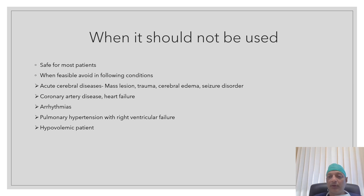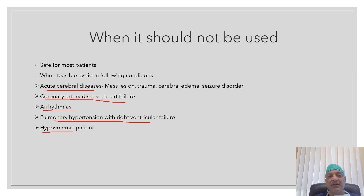Though considered safe for most patients, permissive hypercapnia should be avoided in certain categories if feasible, which includes patients with acute cerebral disease, patients with coronary artery disease and heart failure, patients who are at risk of or who have arrhythmias, patients with pulmonary hypertension with right ventricular failure. It should also be avoided in hypovolemic patients, and if it is done in a hypovolemic patient, hypovolemia should be corrected before proceeding with permissive hypercapnia.